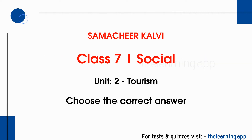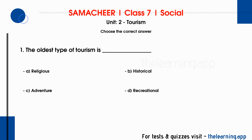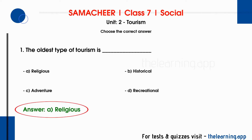First, choose the correct answer. First question: the oldest type of tourism is dash. Options are A) Religious, B) Historical, C) Adventure, D) Recreational. Correct answer is option A, Religious.